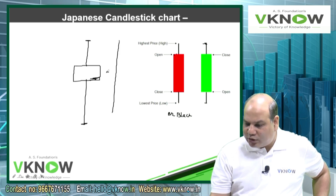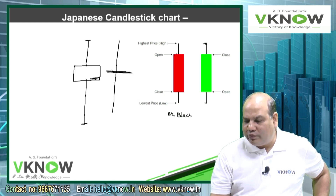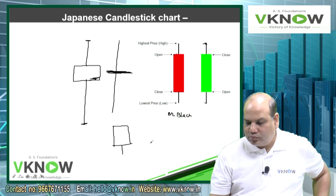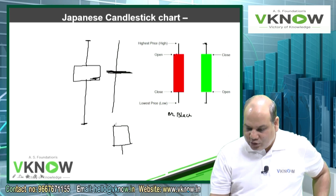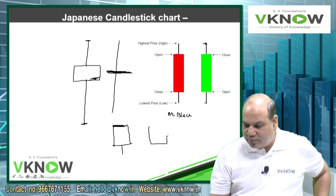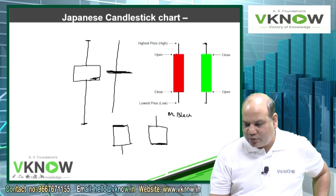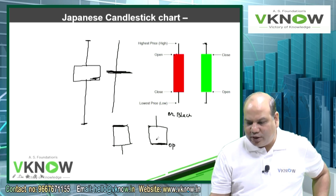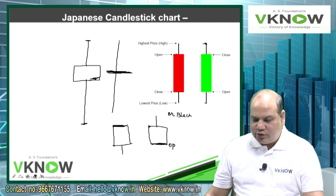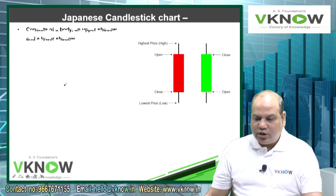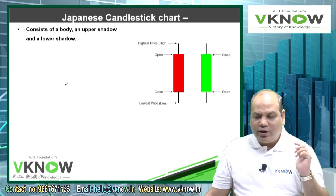There can be a candle where opening and closing both were equal, so only one line here. The candle can be like an ice cream, meaning closing price and maximum price were the same, or opening price and the lowest price are same. This is quite interesting to understand how during a period the market has behaved. You can draw candlestick for one hour, one day, one month and accordingly you can interpret.